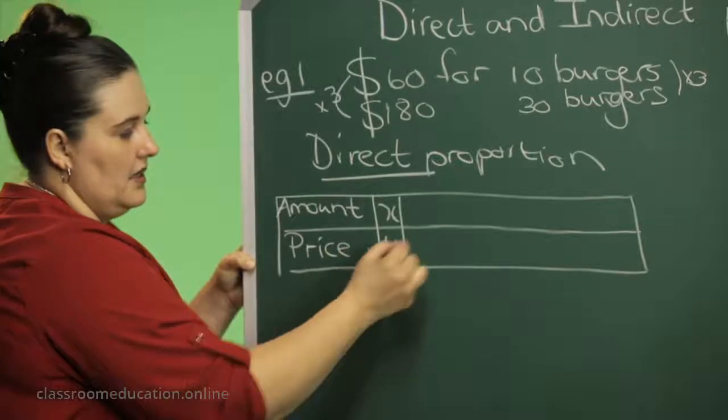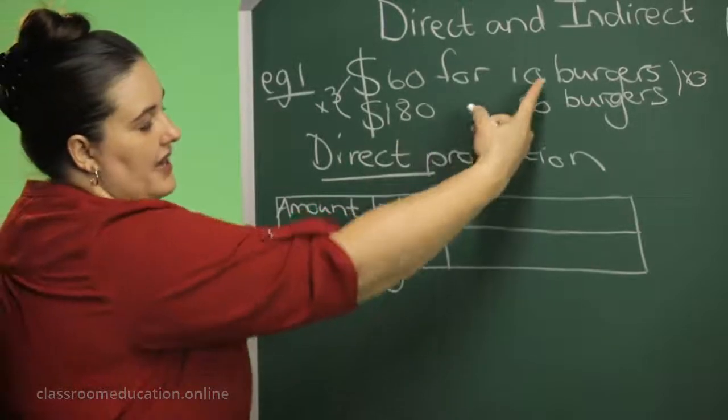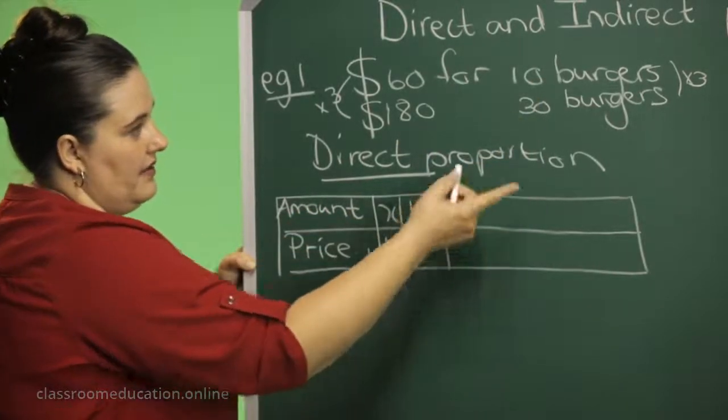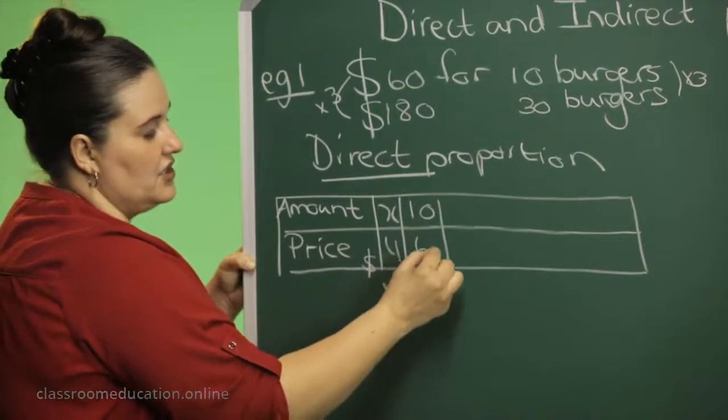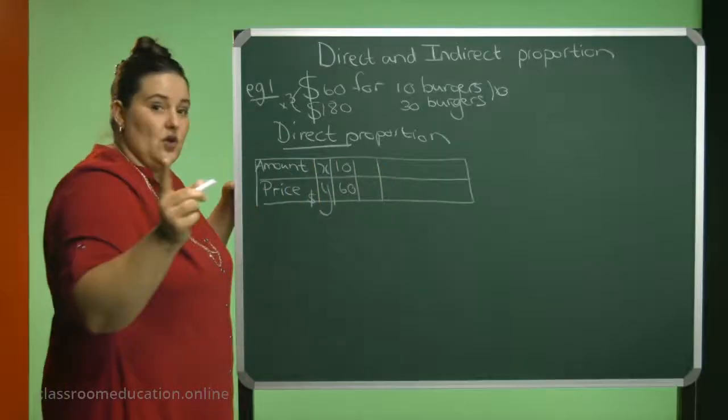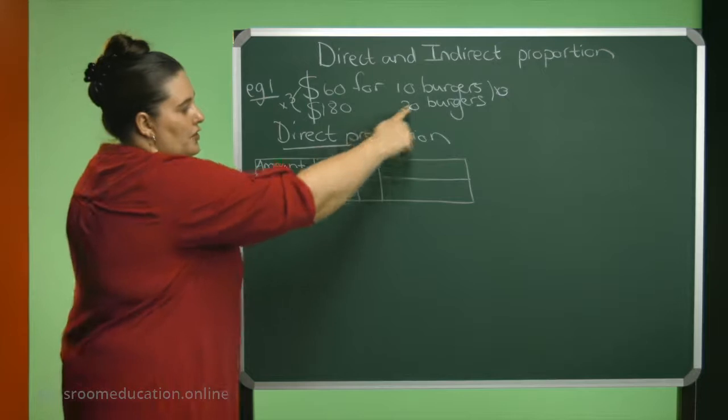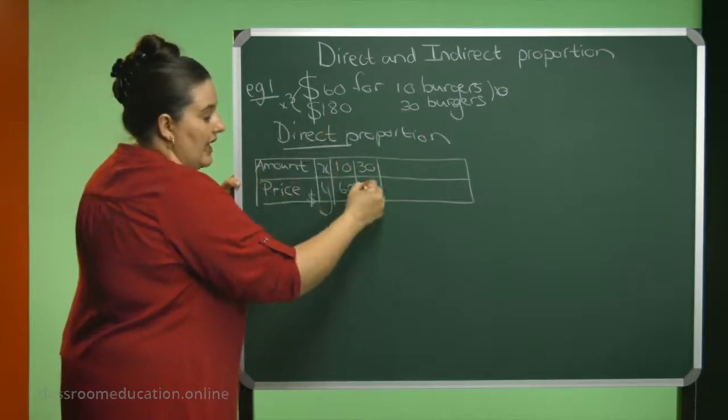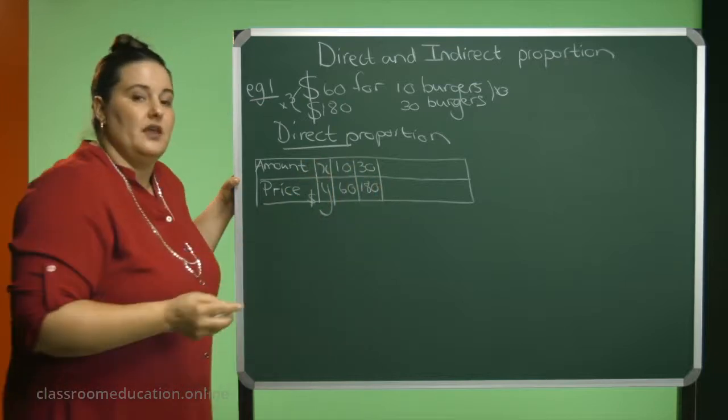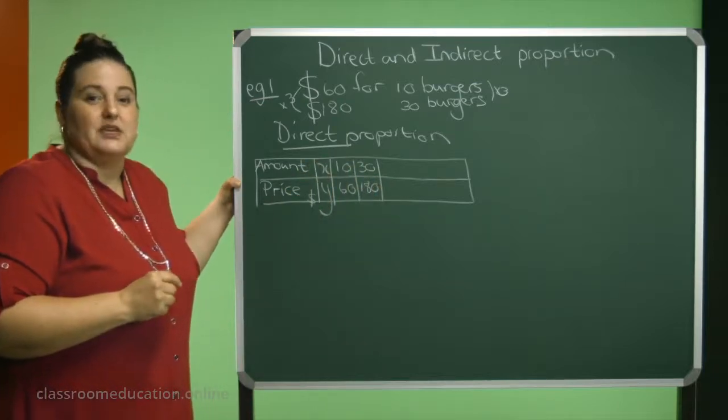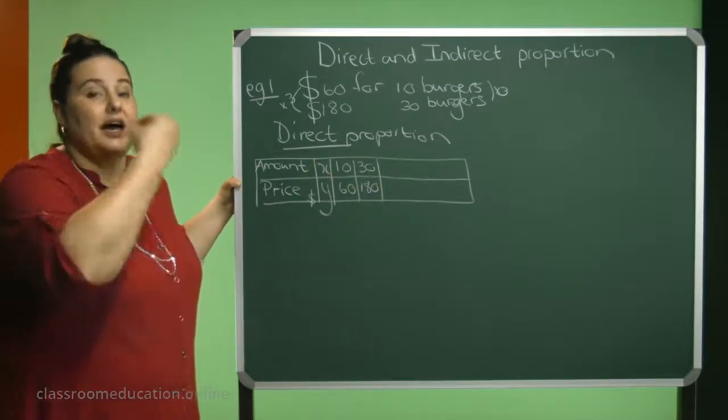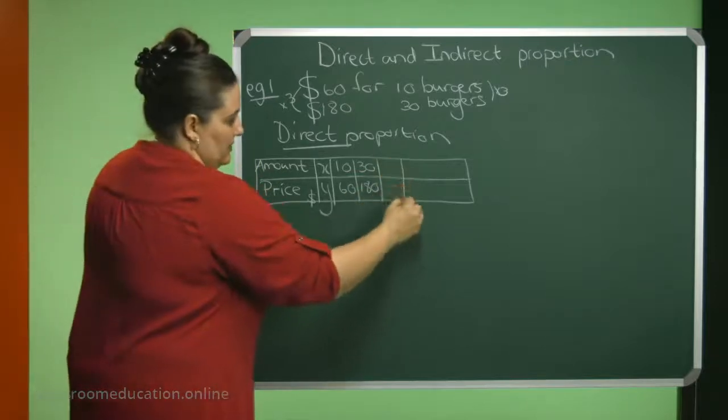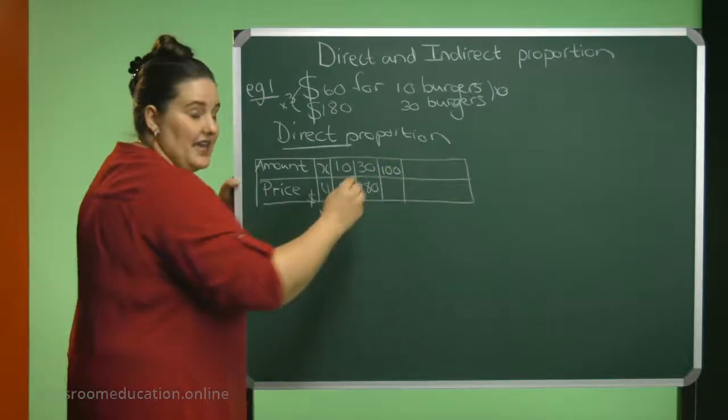This will be in dollars. Now I had 10 burgers, and the price was $60. And I saw just now that for 30 burgers, the price will be $180. But what will the price be if you want to buy 100 burgers? How can we work that out?